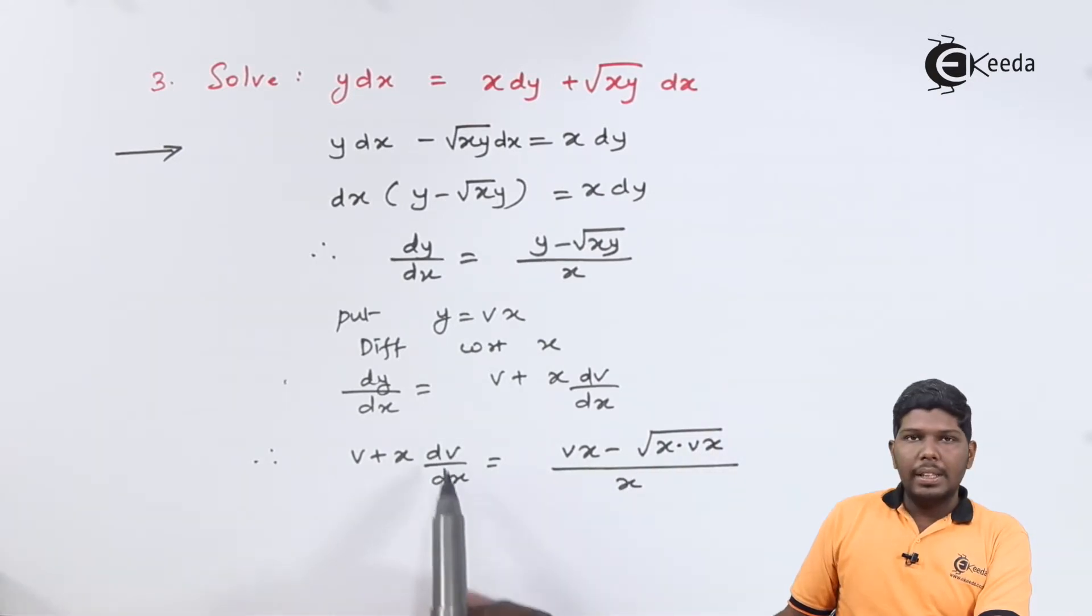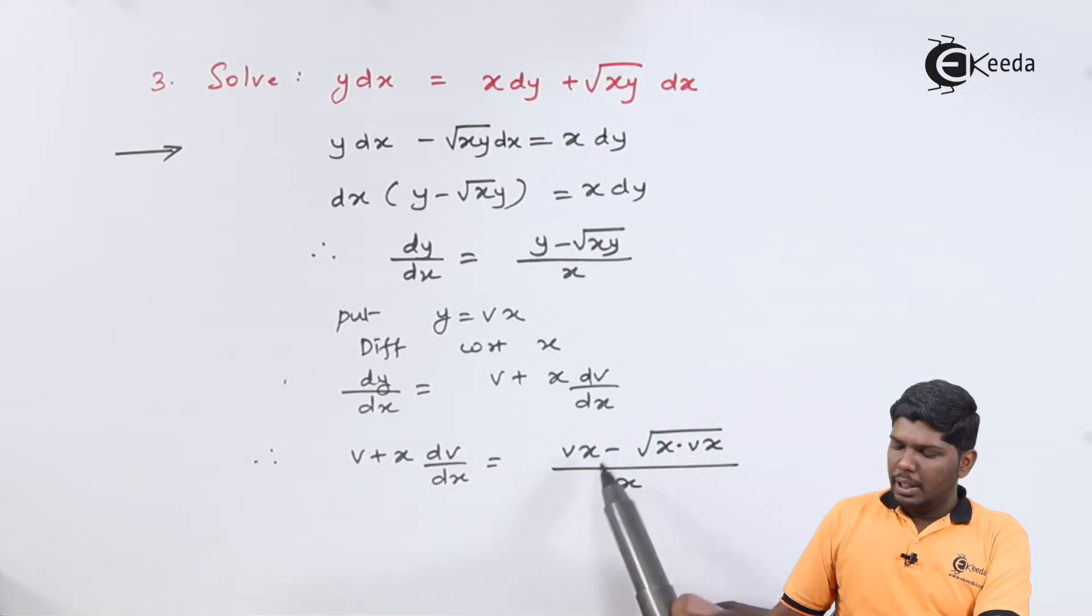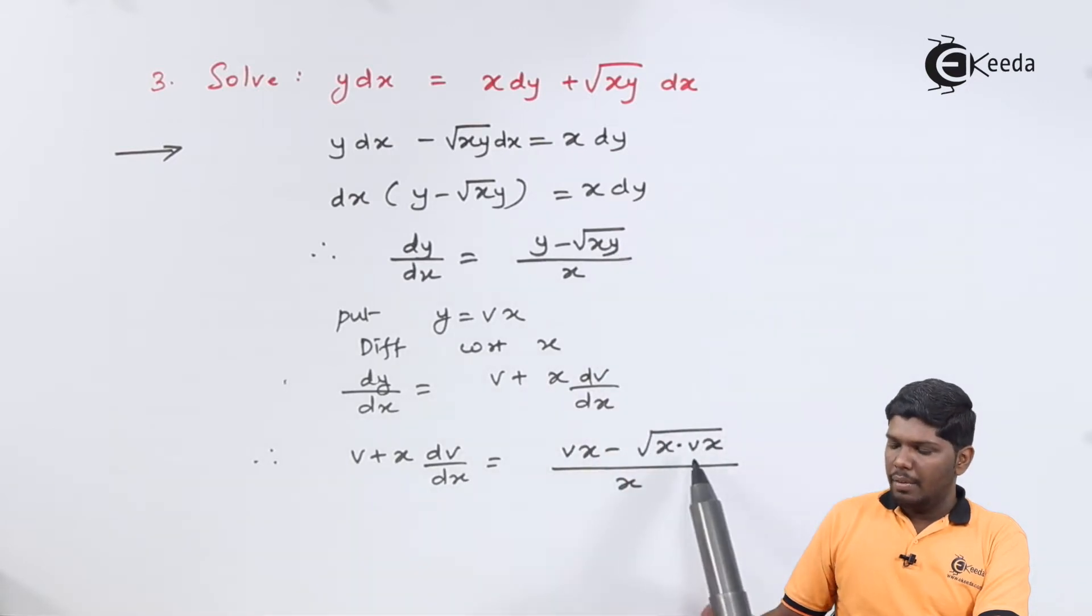After substituting, we have v plus x dv by dx is equal to, value of y will be vx minus under root of x.